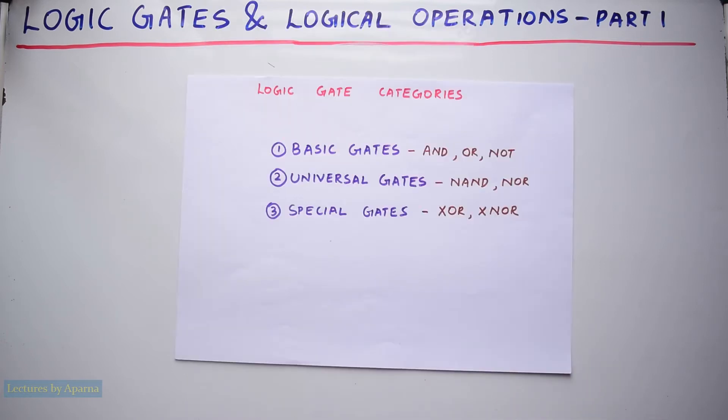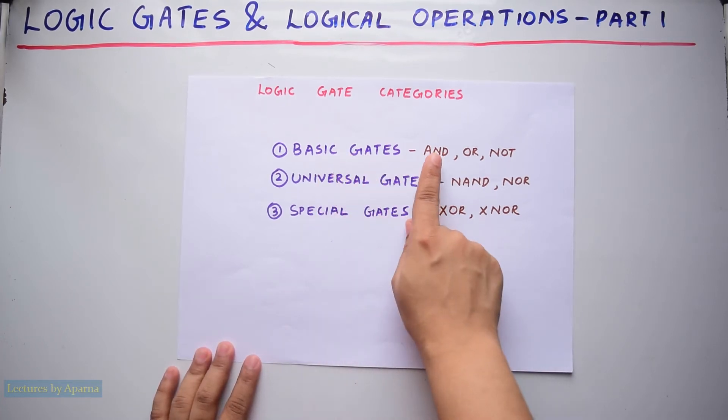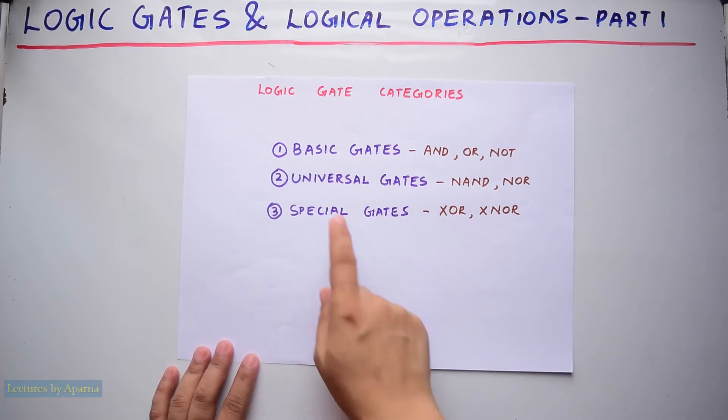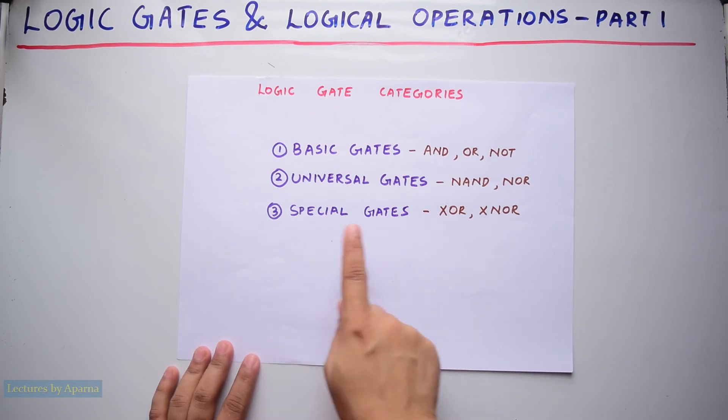Logic gates can be classified into three categories: Basic gates which are AND gate, OR gate, and NOT gate; Universal gates which are NAND gate and NOR gate; and special gates which are XOR gate and XNOR gate.